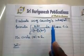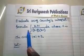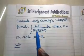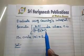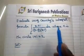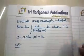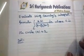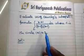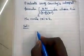First problem: Evaluate using Cauchy's integral formula — integral over C of (z+1) divided by (z−3)(z−1) dz, where C is the circle |z| = 2. So |z| = 2 means radius 2.